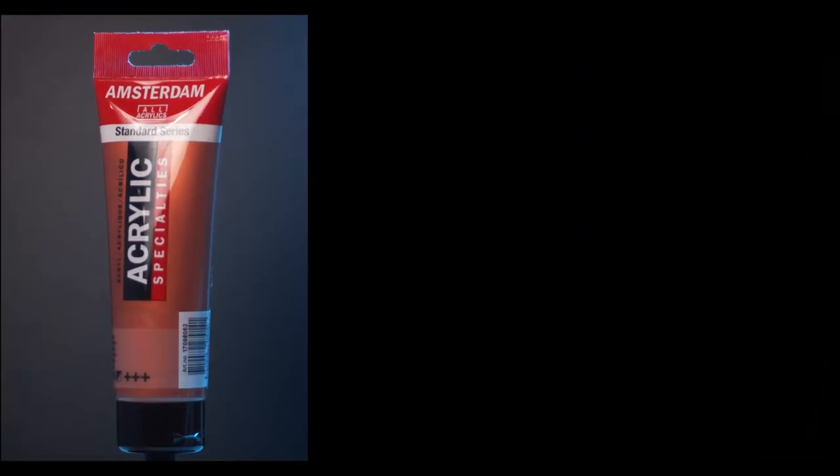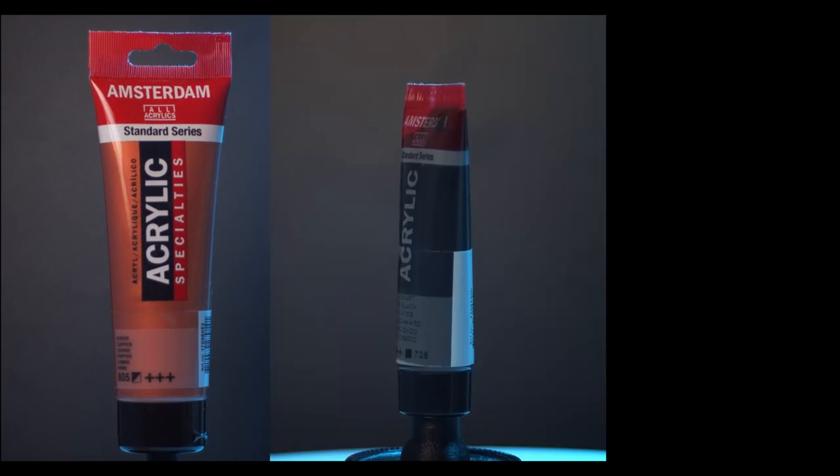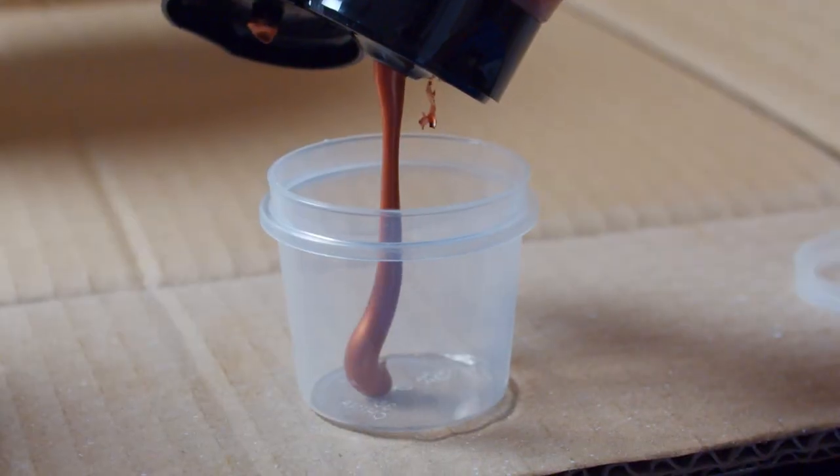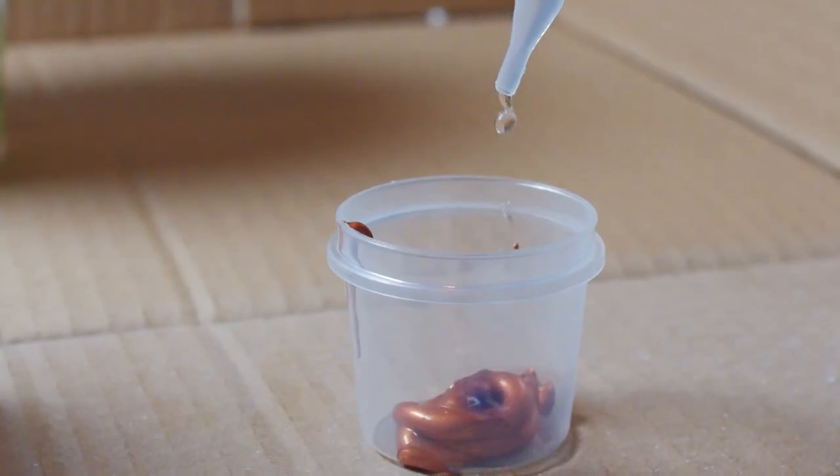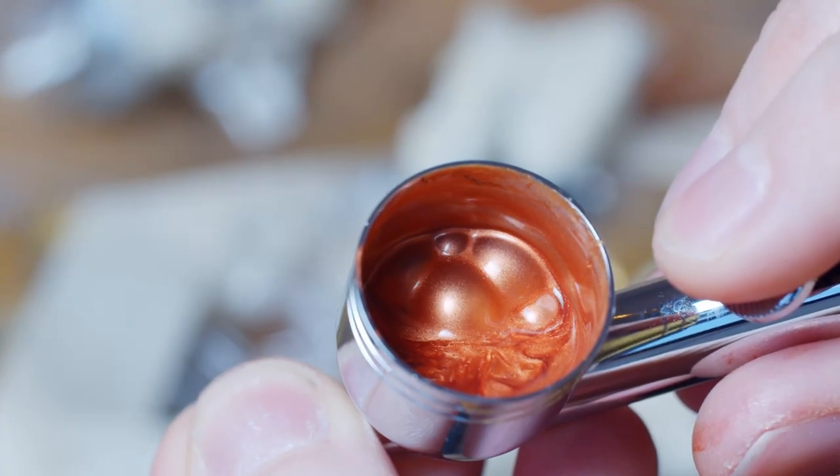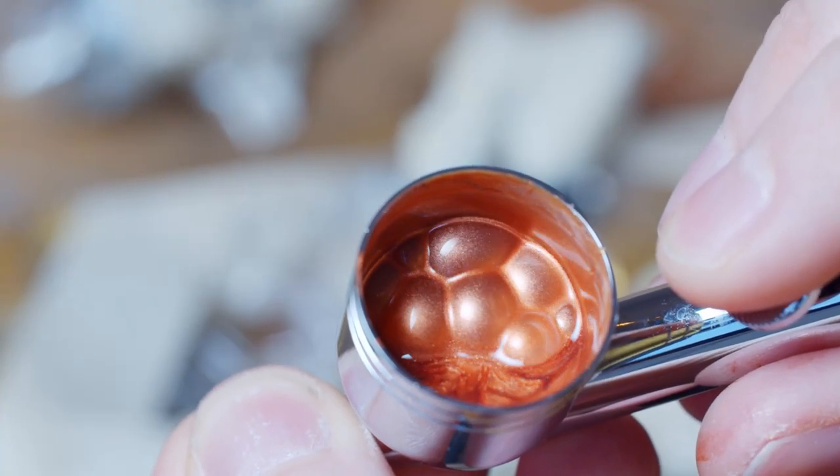For my base colors, I wanted to go with copper, black, and gold, three colors which to me feel very rooted in the steampunk aesthetic. I mixed up acrylic paint I had found at my local art supply store. Compared to normal airbrushing paint, I find them to be much cheaper but still stick well and look really good.